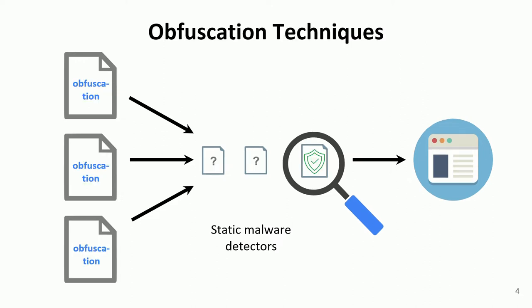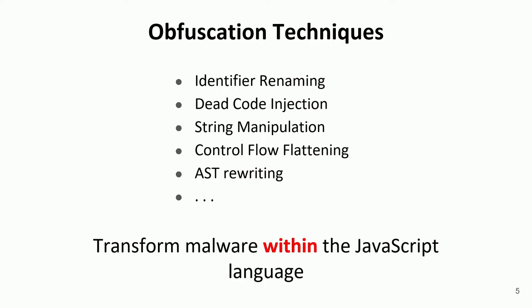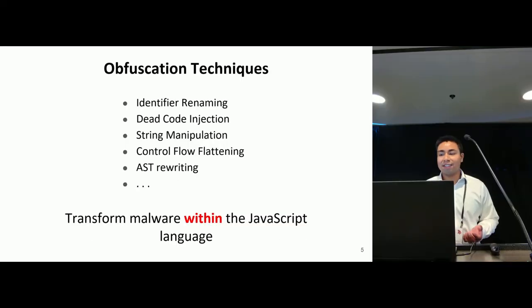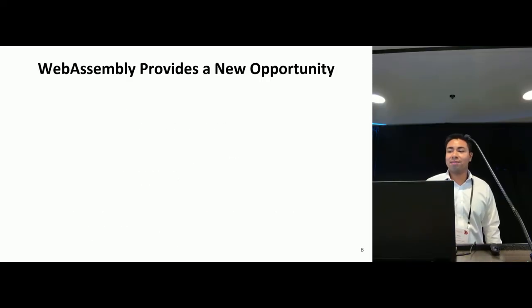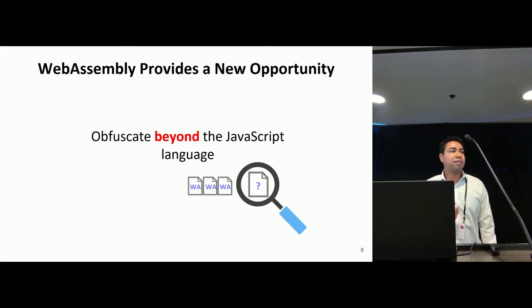As a response, attackers try to hide the maliciousness of their scripts using obfuscation techniques. There are several obfuscation techniques for JavaScript, including identifier renaming and dead code injection. But all of these techniques only transform the malware within the bounds of the JavaScript language. While JavaScript has historically been the only standard language for web applications, this is no longer the case with the introduction of WebAssembly. WebAssembly presents new opportunities for those designing web attacks — what if they could use this new web standard to obfuscate malware files beyond the limits of JavaScript?